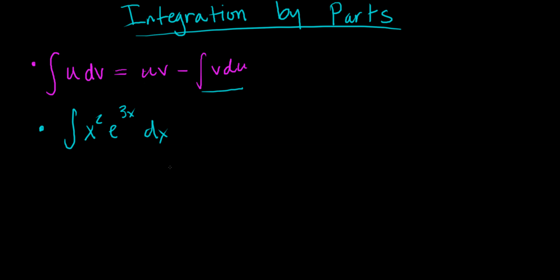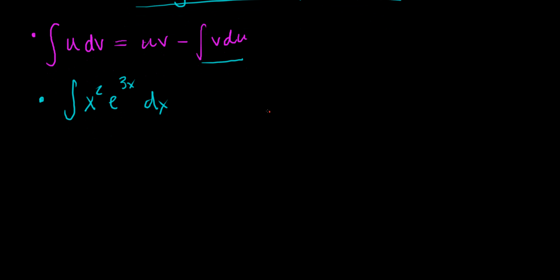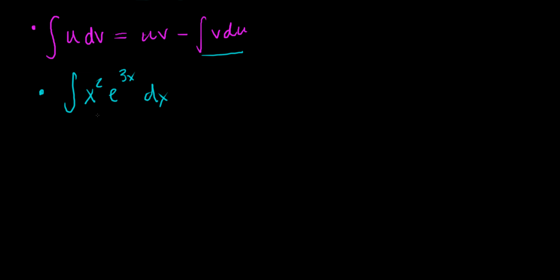What we'll have to do is use the integration by parts formula again on that particular integral until we finally get down to a situation where we don't have two functions in there. We also know we can't do a u-substitution here. If you let u equal x squared, then the derivative is 2x dx and there's nothing to substitute for — we have e to the 3x but not another x. So you'd actually be introducing extra terms, which is not helpful.